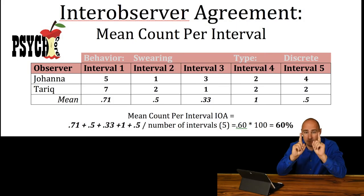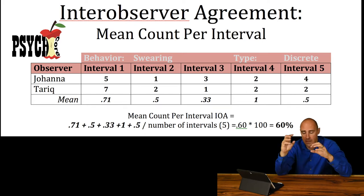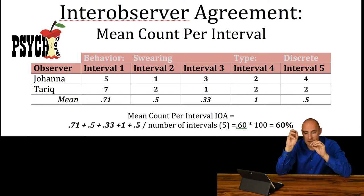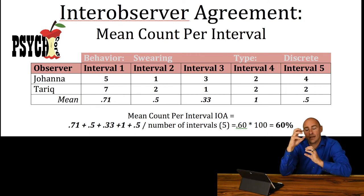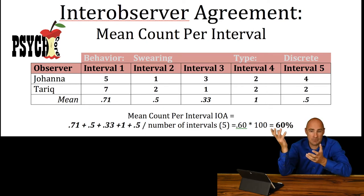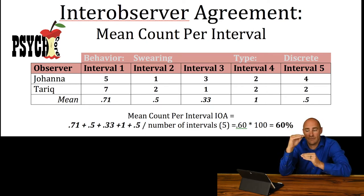Two people — they're each doing observations of the same thing, the same person, the same behavior. They're going to end up with a count for interval one for each person. So, one person got five and the other got four. We're going to create a ratio of those: take the smaller divided by the larger. Five divided by four — 80%, right?